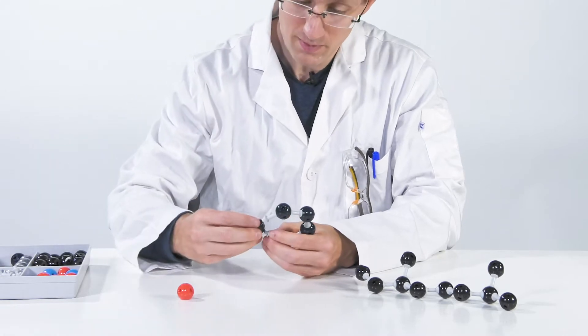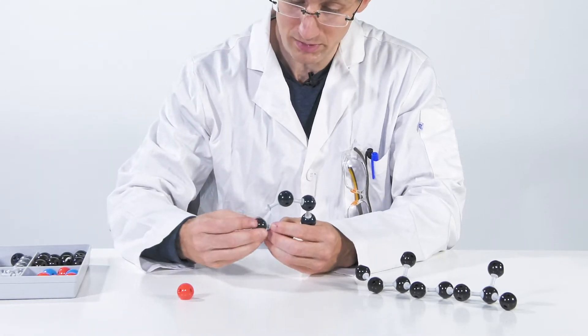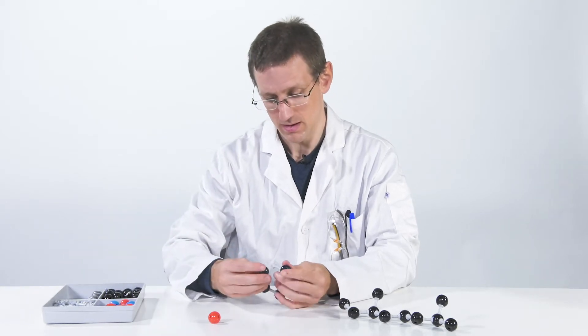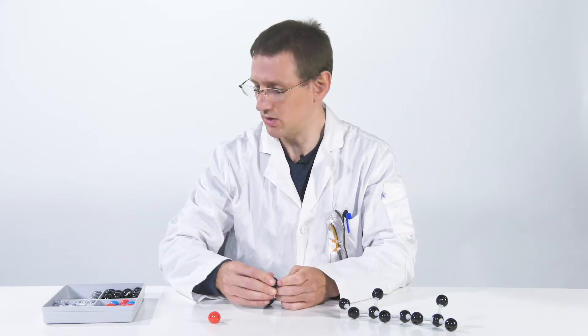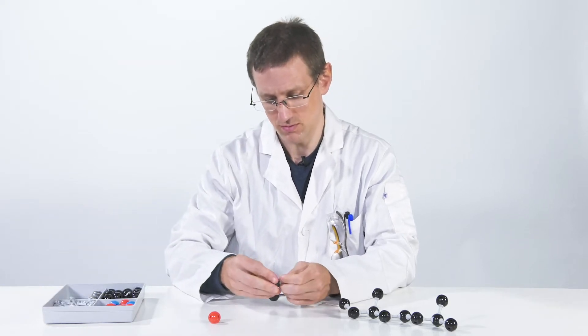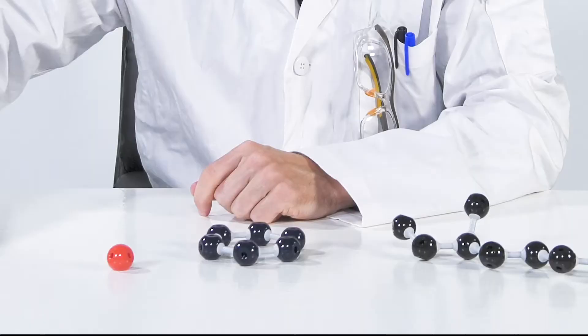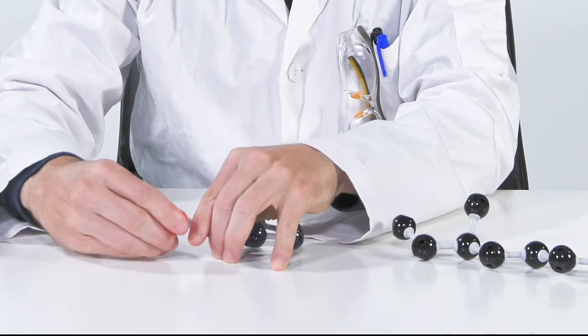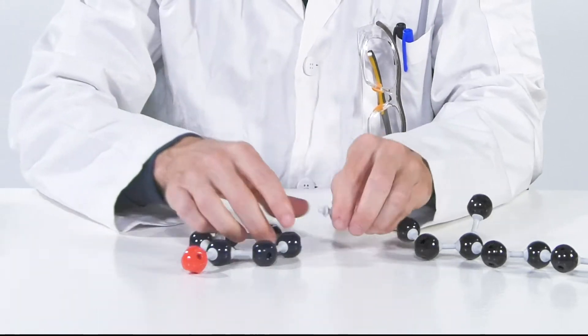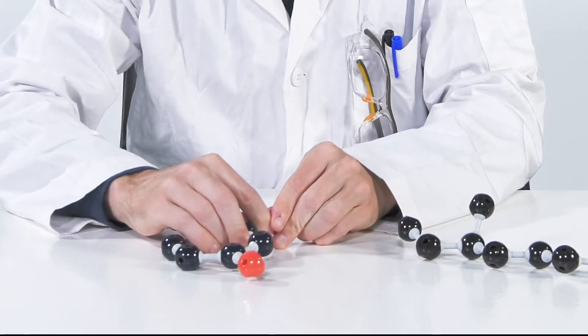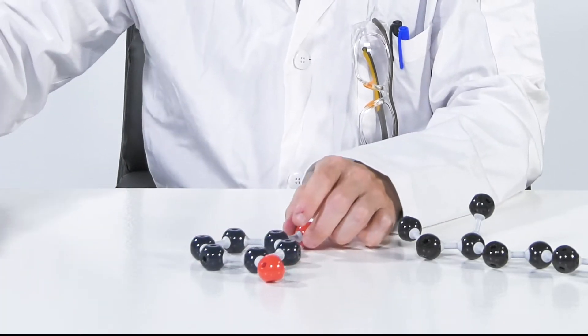And when we have this built, one more, then we can start decorating this. So here we have the ring, we need some oxygens for our alcohols on the benzene ring, here.